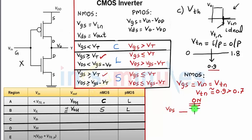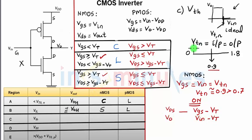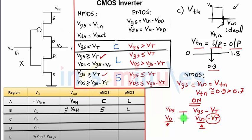To determine the region, we write VDS vs. VGS minus VT. For the NMOS, VDS equals Vout and VGS equals Vin minus VT. At the switching threshold, Vin equals Vout, so the two terms on either side differ only by the subtracted VT. This means VDS is greater than VGS minus VT, which indicates that the NMOS transistor is operating in the saturation region when the input voltage is at the switching threshold.